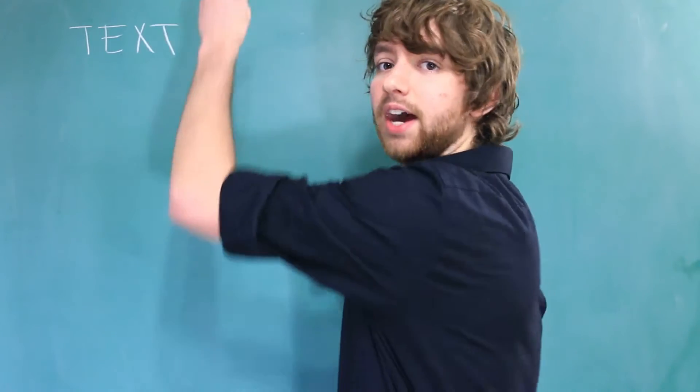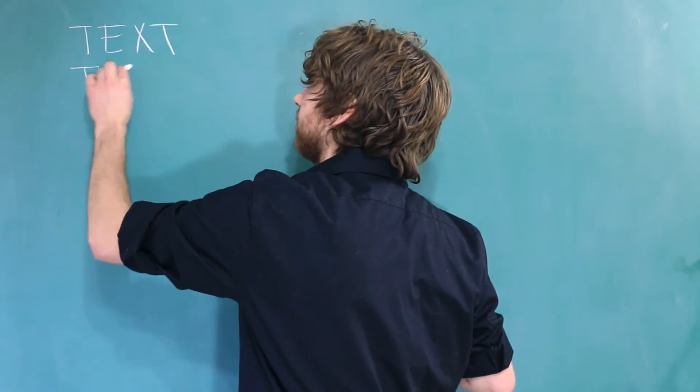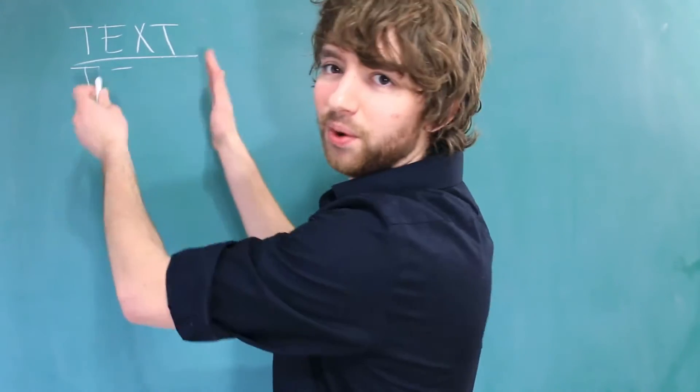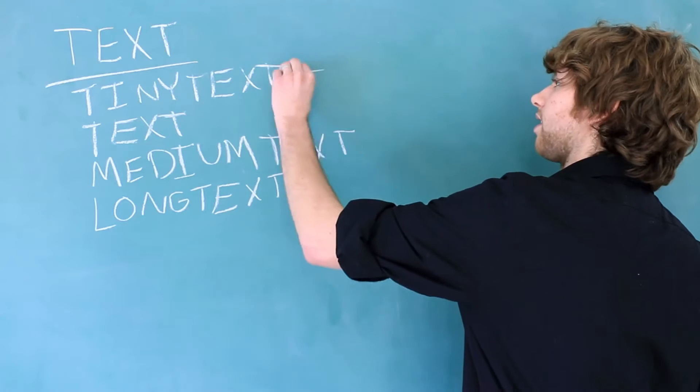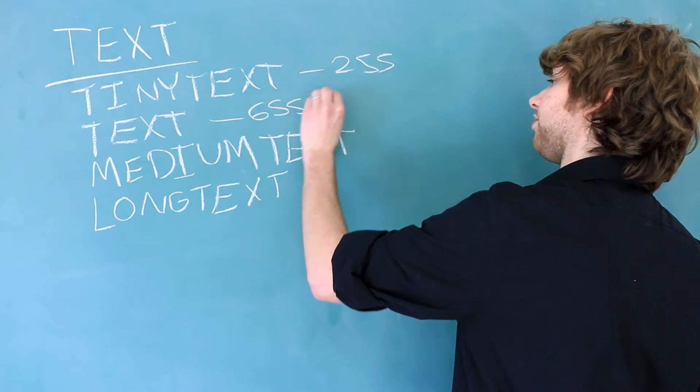So we have text, and then we have tiny text, so that would be smaller than text, but I'll just put it here, since this is kind of like what they all have in common. Now the max size for these is 255, 65535.